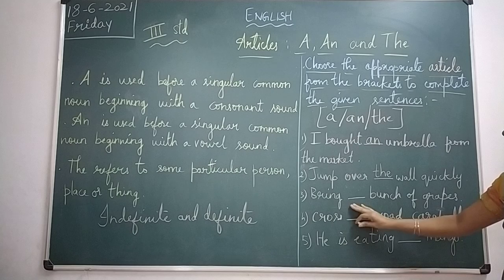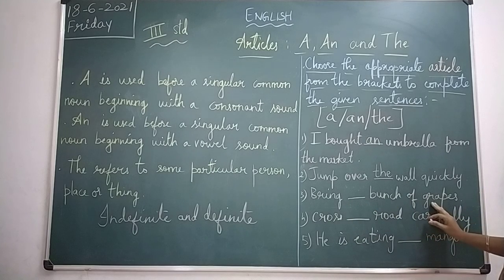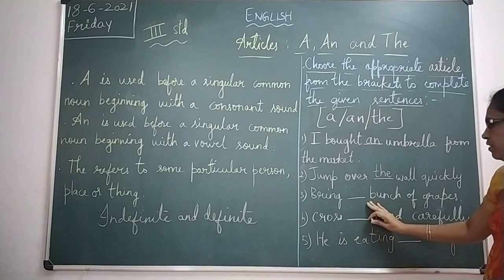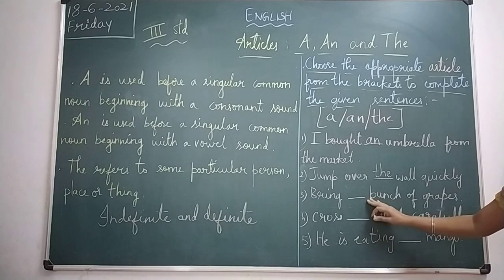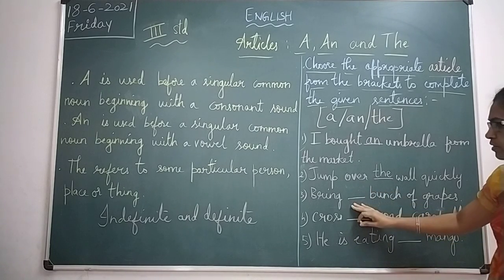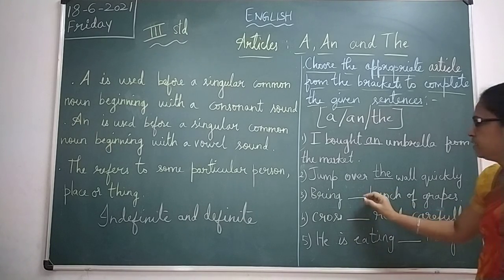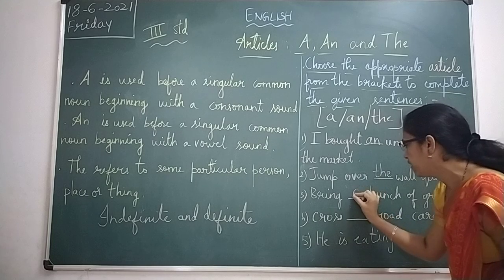Next: 'Bring dash bunch of grapes.' The word 'bunch' — B begins with a consonant sound, so you have to fill it with article 'a' here. Bring a bunch of grapes.